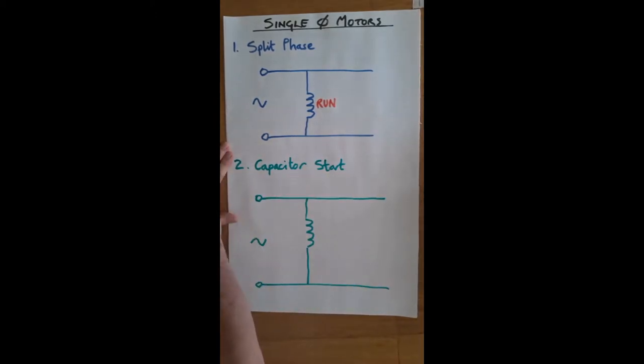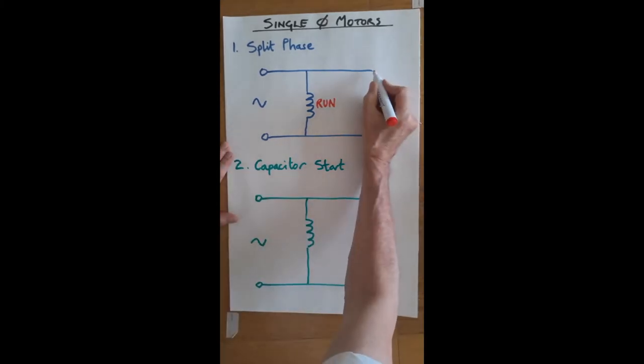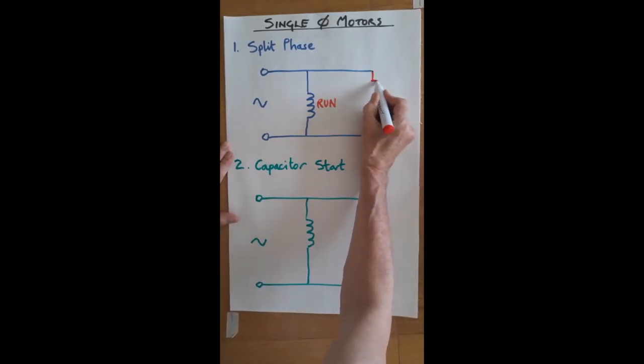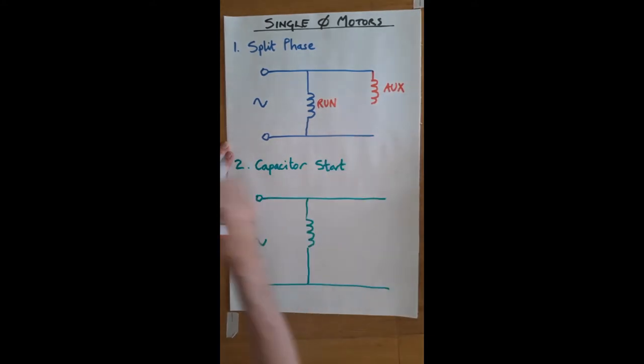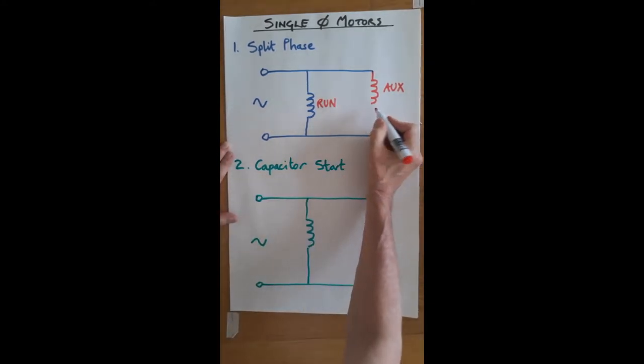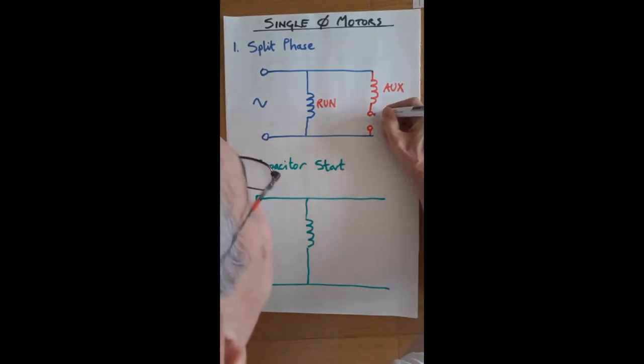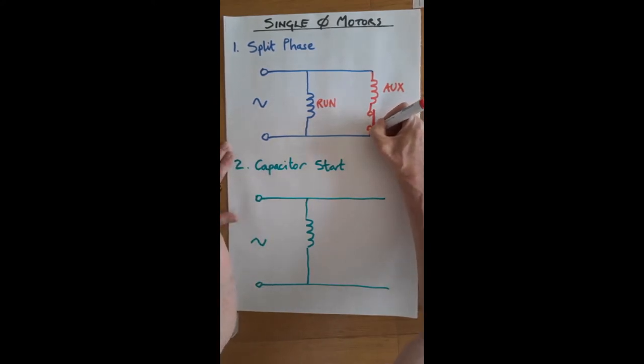So in this type of motor, the split phase motor, there is an additional winding and we call it either the auxiliary - and that's written in your handout - or the start winding. So it's used to start the motor and it's in series with a centrifugal switch.